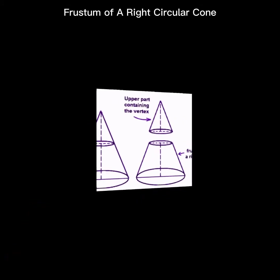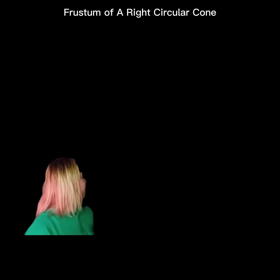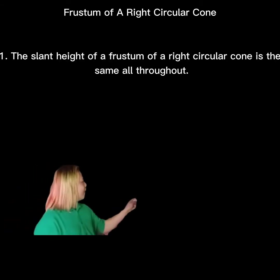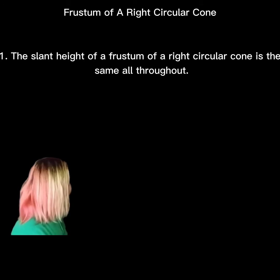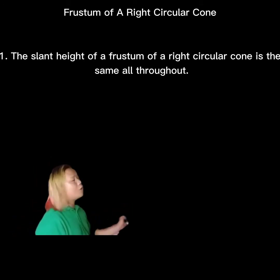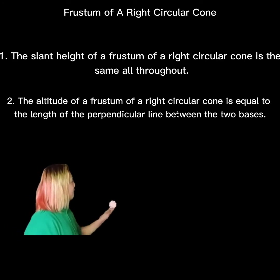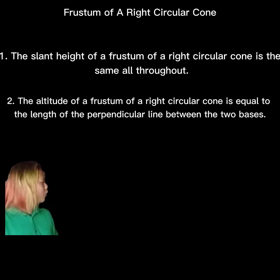There are two properties of the frustum of a right circular cone. First, the slant height of the frustum of a right circular cone is the same all throughout. Second, the altitude of the frustum of a right circular cone is equal to the length of the perpendicular line between the two bases.